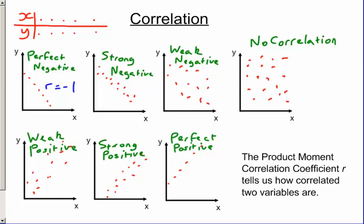This strong negative, r is equal to minus 0.9. For the weak negative, r is equal to maybe minus 0.4. For the strong positive, r is equal to 0.8. And for the weak positive, that's maybe r is equal to 0.3. So we give a value depending on how correlated the data is. We can work out this value, and we're going to look at how we can do that using our graphics display calculator to work out the value of r.